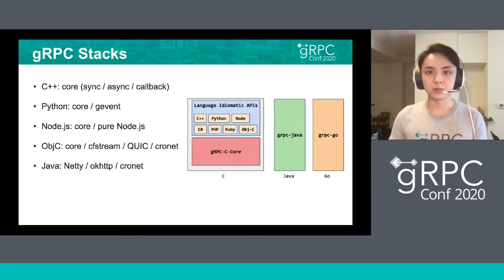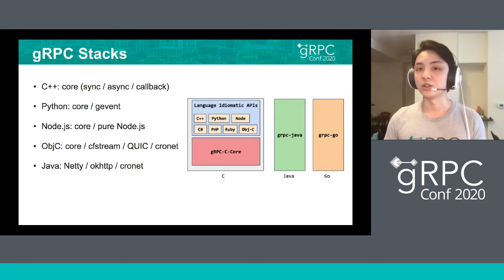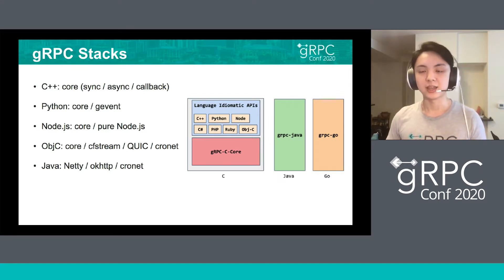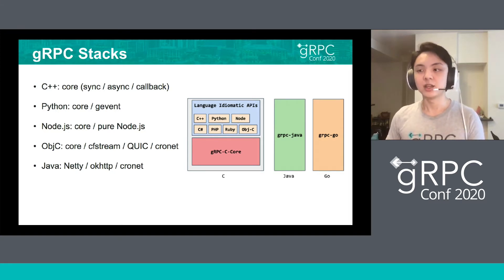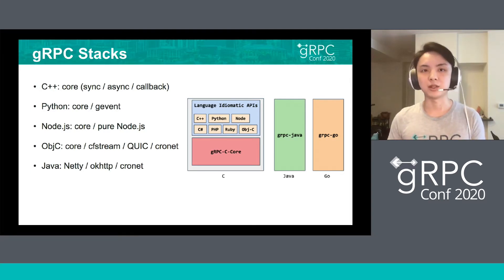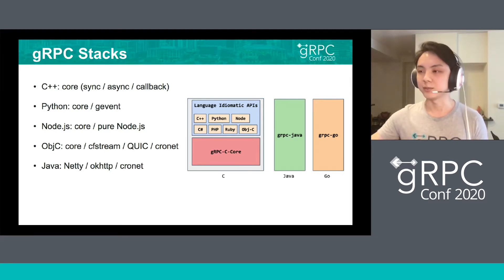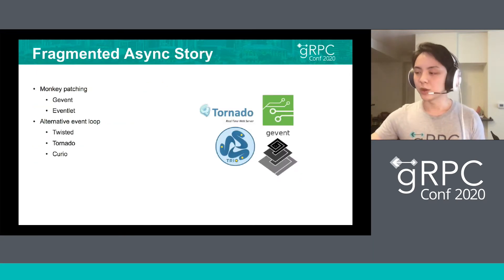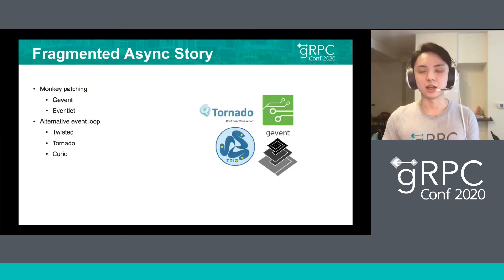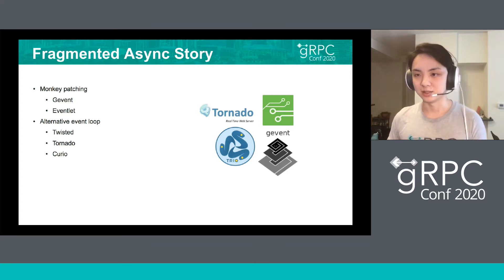For many of you may know, gRPC has a lot of stacks. We support 14 different languages, and some of them even have more than one implementation. And some implementations share a majority of code paths, but some of them are very different in programming paradigm. So why do we want to build a new stack if there are already many stacks existing?